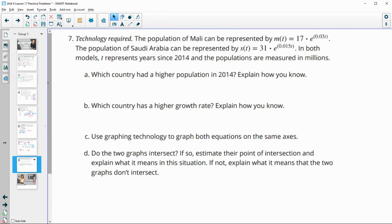Number 7, technology is required for this. The population of Mali can be represented by the function M of t equals 17 times e to the 0.03t. And the population of Saudi Arabia can be represented by S of t equals this. In both models, t represents the years since 2014, and the populations are measured in millions.